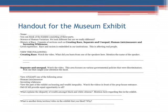This is the handout they received. I pointed out the different sections in the exhibit and said you must go to at least these areas: 'Creating Race' — watch a video there; 'Separate and Unequal' — watch a video and focus on governmental discriminatory policies. The last part, toward the back of the exhibit, talked about wealth inequality, the GI Bill, and how FHA housing laws were actually discriminatory. I wanted to make sure they went there, and they did.